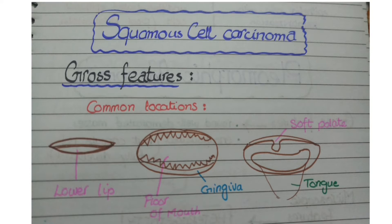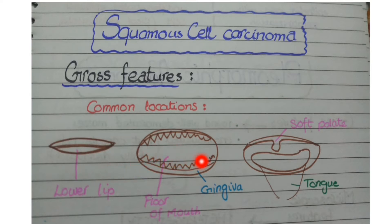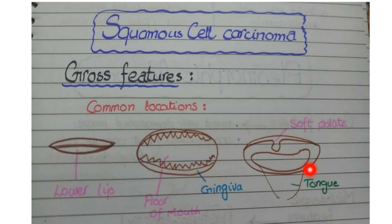You can remember these three diagrams in sequence. In the first, only the lips are shown. In the second, the mouth is opened showing the gums and floor of mouth. Lastly, you see the protruding tongue and soft palate. So the most common locations are lower lip, gums, floor of mouth, soft palate, and tongue.